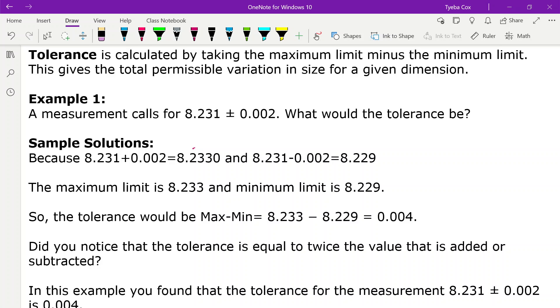The first way, if we look at 8.231 plus 0.002, we get 8.233. And if we take 8.231 and we subtract 0.002, we get 8.229. Now our maximum limit is 8.233 and our minimum limit is 8.229.